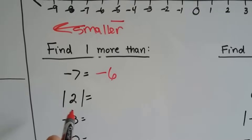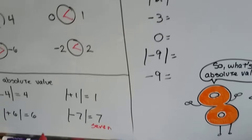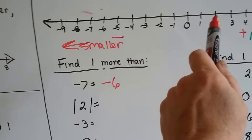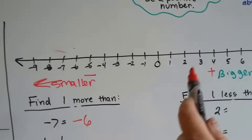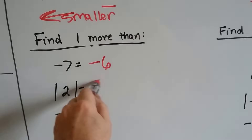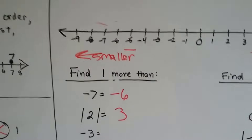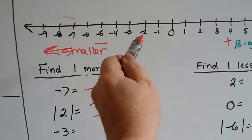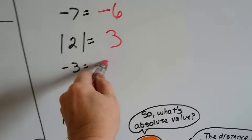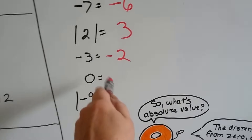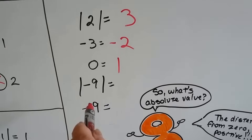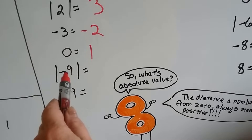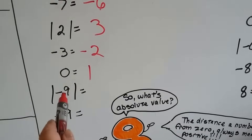One more than the absolute value of two. Remember what the absolute value of two is? It's just how far away it is from zero — two is two spaces away from zero, and absolute values are always positive. So one more than two is three. What's one more than negative three? Here's negative three, and if we want to go bigger we go right, so negative two is bigger than negative three. What's one more than zero? One. What's one more than the absolute value of negative nine? The absolute value is the distance from zero, always positive, so the absolute value of negative nine is nine — and one more than nine is ten.